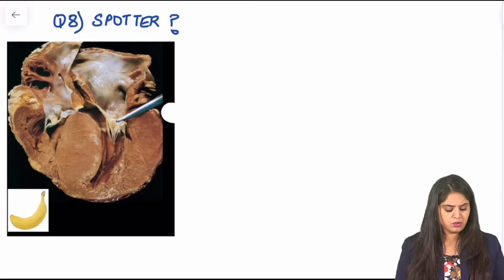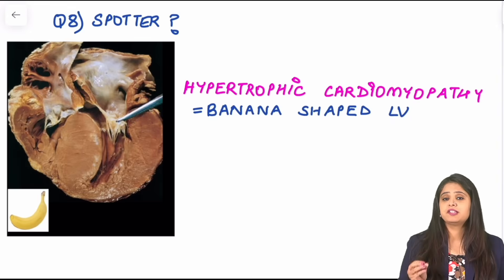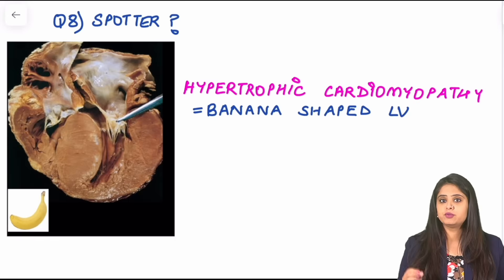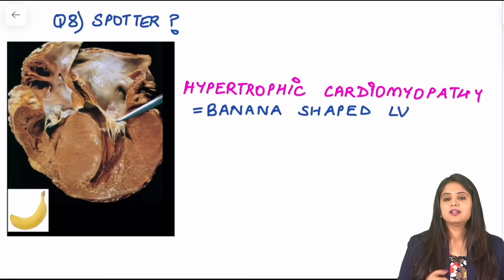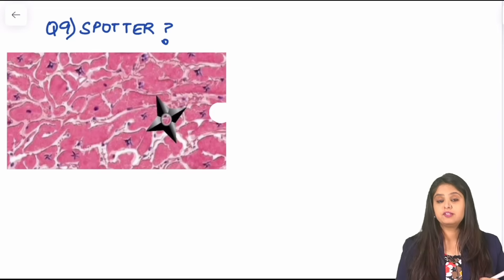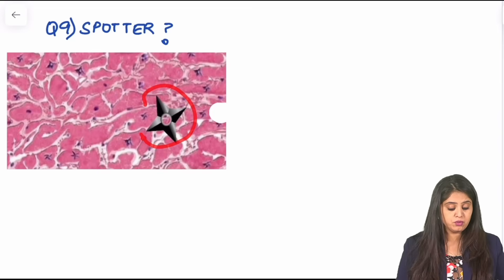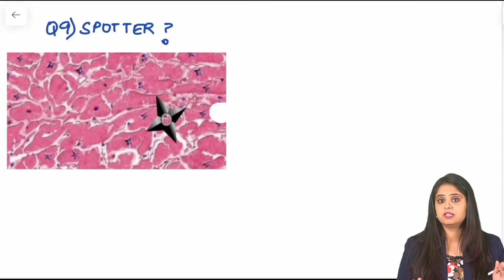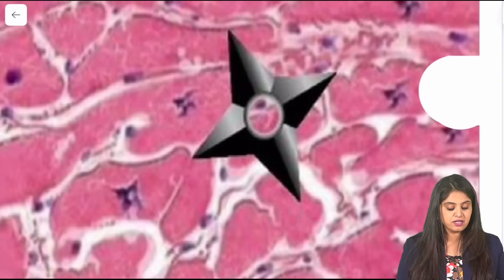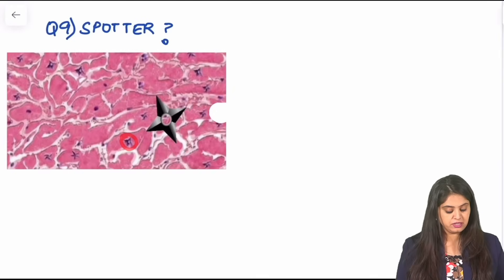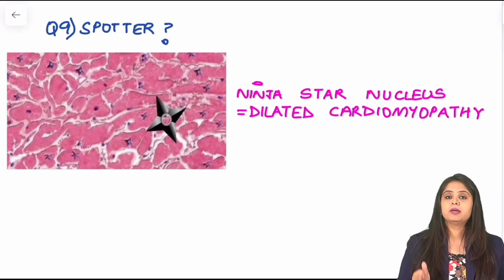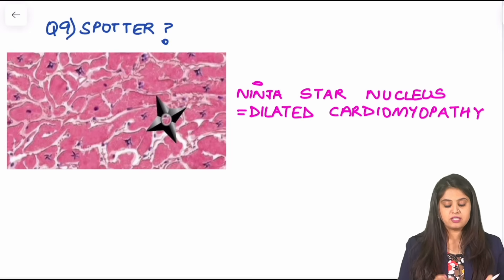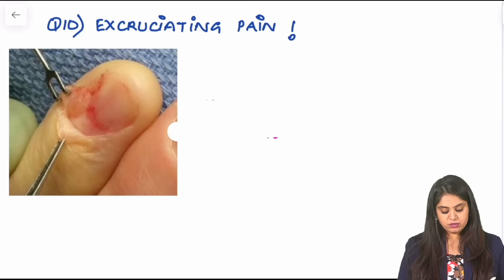Next image: classic spotter — banana-shaped heart. You can't go wrong: this is hypertrophic cardiomyopathy. You'll always get a question about a 19-year-old football or basketball player who suddenly collapsed — sudden death, banana-shaped heart equals hypertrophic cardiomyopathy. Versus a classical photo of a ninja-star nucleus: that points to dilated cardiomyopathy. These two pictures are a must-know: banana-shaped heart for hypertrophic, ninja-star nucleus for dilated.